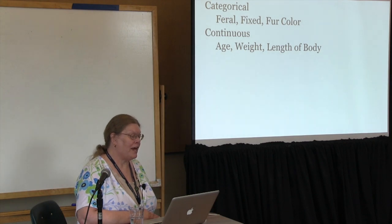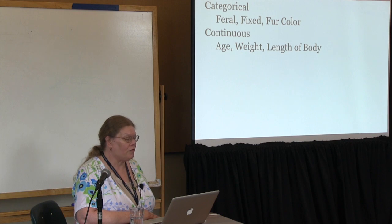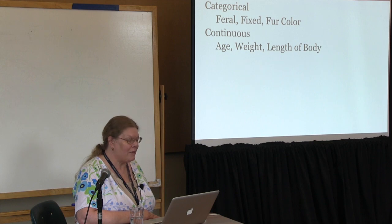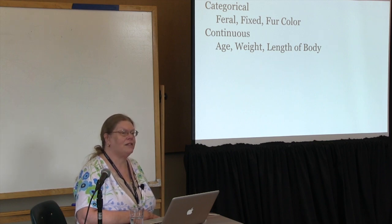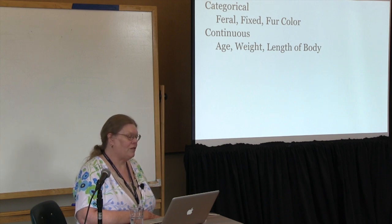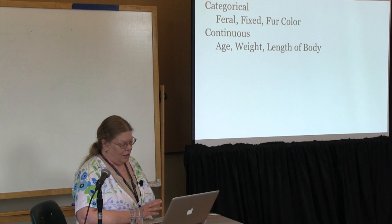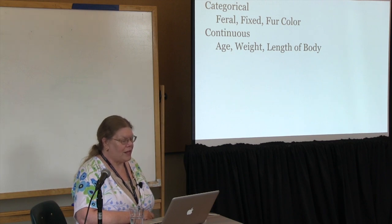There's categorical data and continuous data. Knowing the difference between the two is important for statistical analysis. It's also important when you set up gathering data that you keep in mind what kind of data it is and set everything up for it. Examples of categorical data are feral, fixed, and fur color — they are all distinct variables that are measured as items.